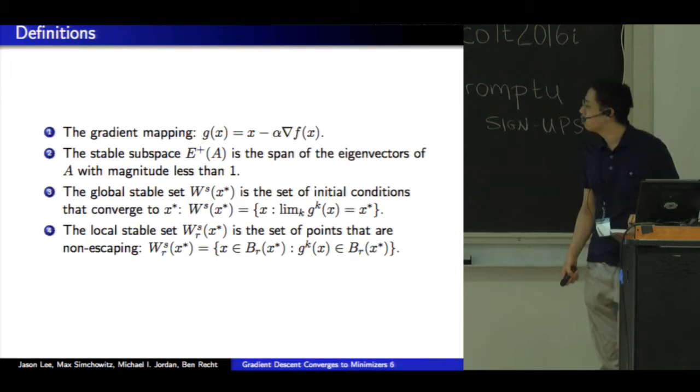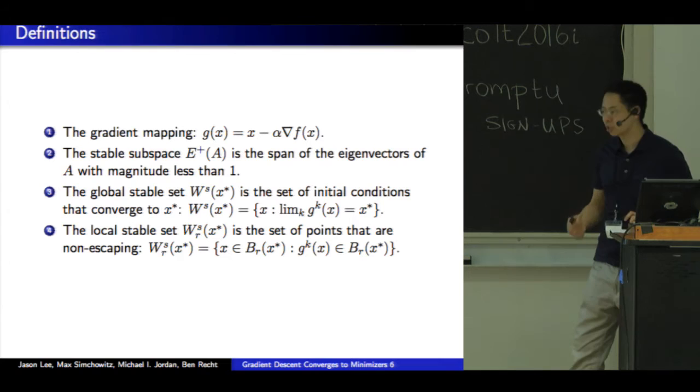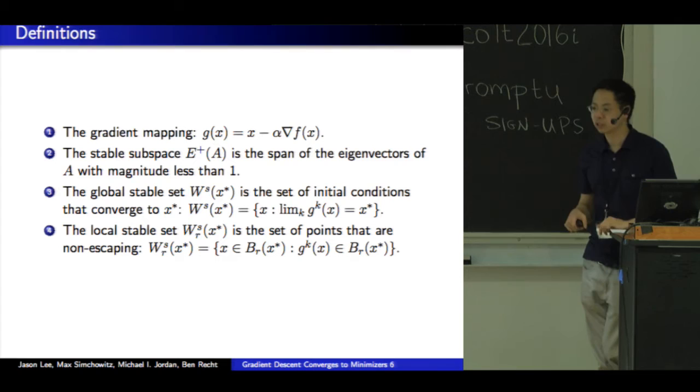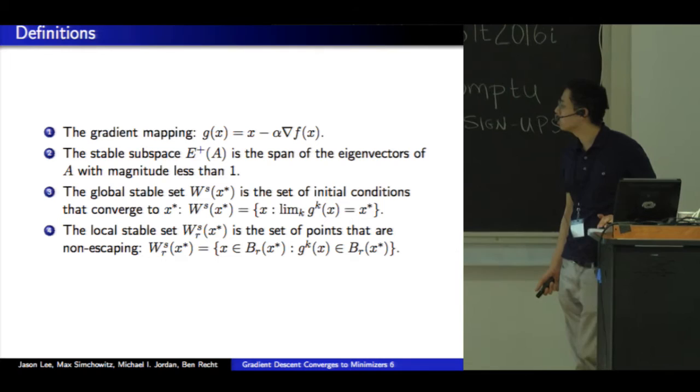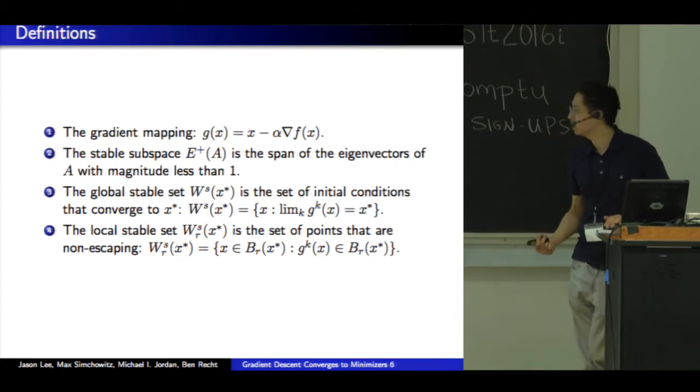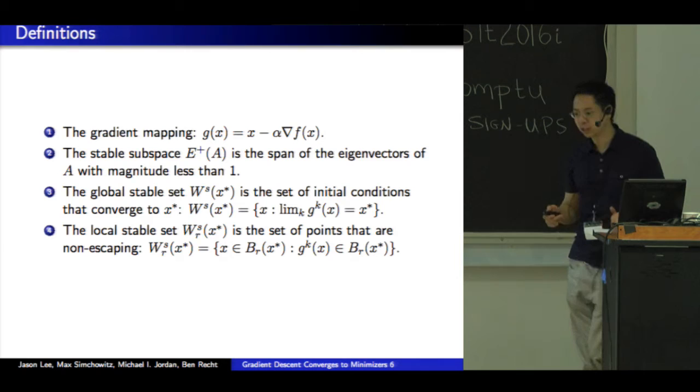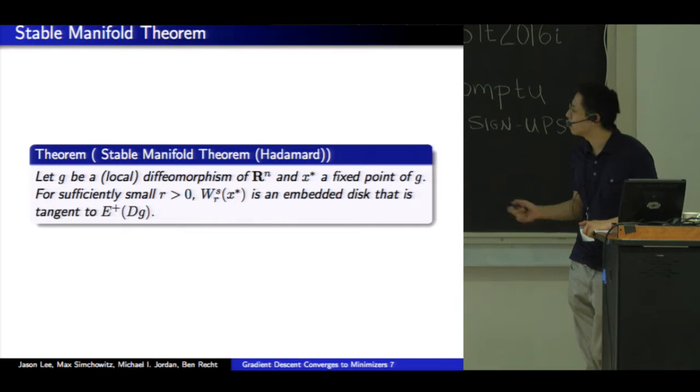There's a global stable set of a stationary point x star. The global stable set is a set of points of which I initialize at converges to a minimizer. So it's colloquially known as the basin of attraction. And also there's something called the local stable sets. So these are the set of points that are in a small neighborhood of a fixed point. And I run my gradient mapping and it stays in that ball. So it's like non-escaping. It's not going anywhere.